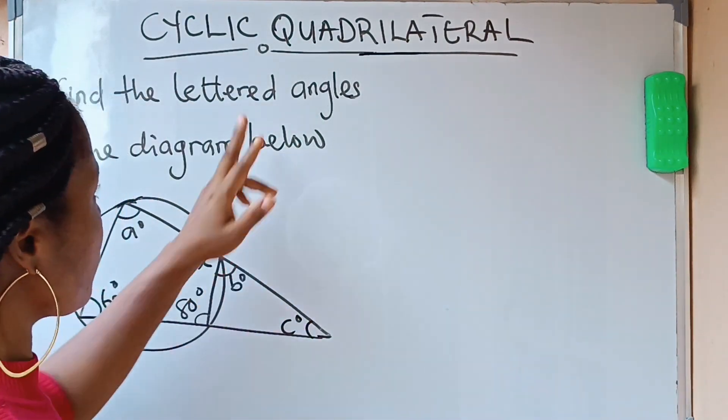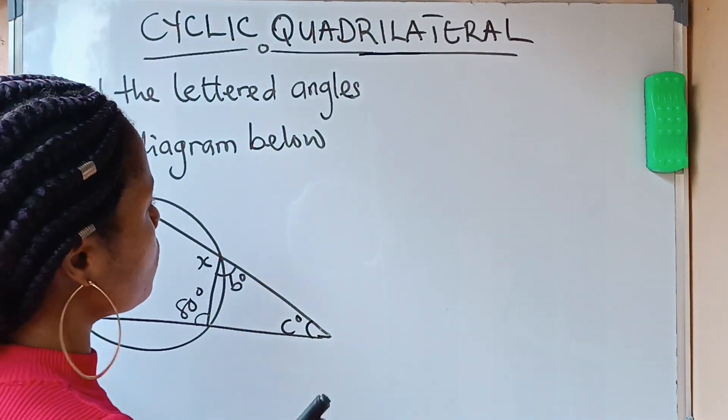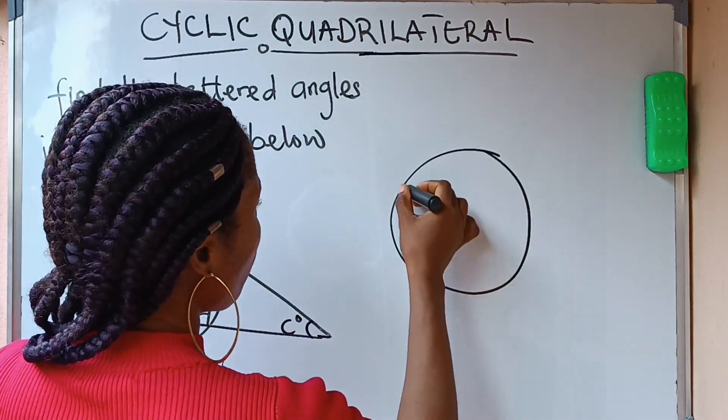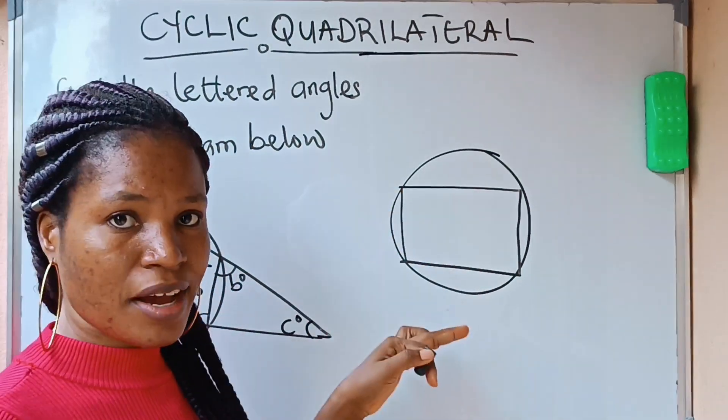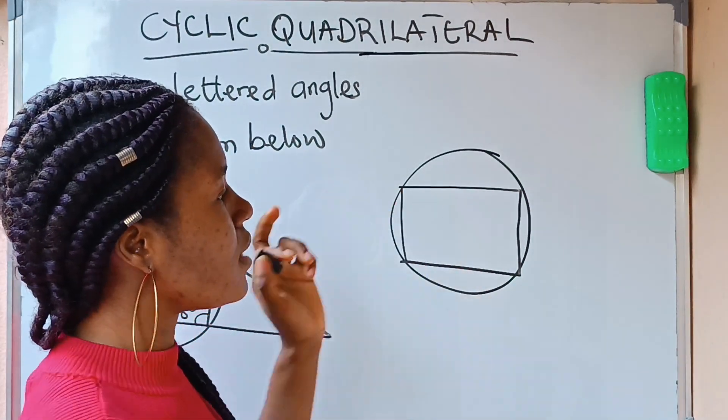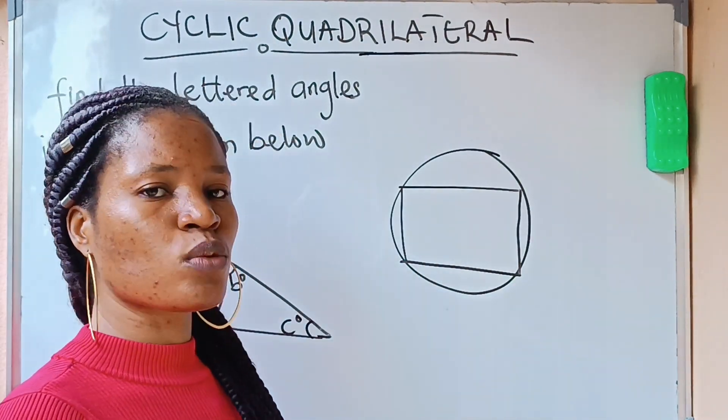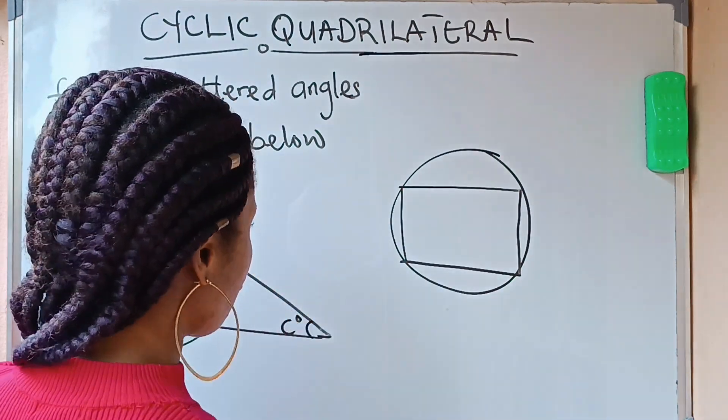First of all, this particular question is under cyclic quadrilateral. What is a cyclic quad? A cyclic quad is when you have a circle and a quadrilateral, that is a four-sided figure inscribed inside that circle. That means that particular diagram that is what I have there is a cyclic quad. And there are some theorems that are associated with this cyclic quad.